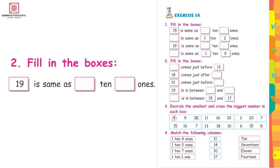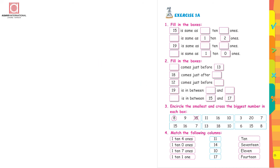Now coming to 19 — make bundles of 19 pencils. 1 bundle you have been able to make. And how many loose pencils are here? 9 pencils. That means you have 1 bundle of 10 pencils and 9 pencils, that is 9 ones. This is written as: 19 is the same as 1 ten and 9 ones. Now in this way, do the rest of the sums yourself. Encircle the smallest and cross the biggest number in each box — I am sure you can do it because the first one has been done for you. Now it's just the matching and I am sure you know it very well because you have done several such questions in the previous pages.